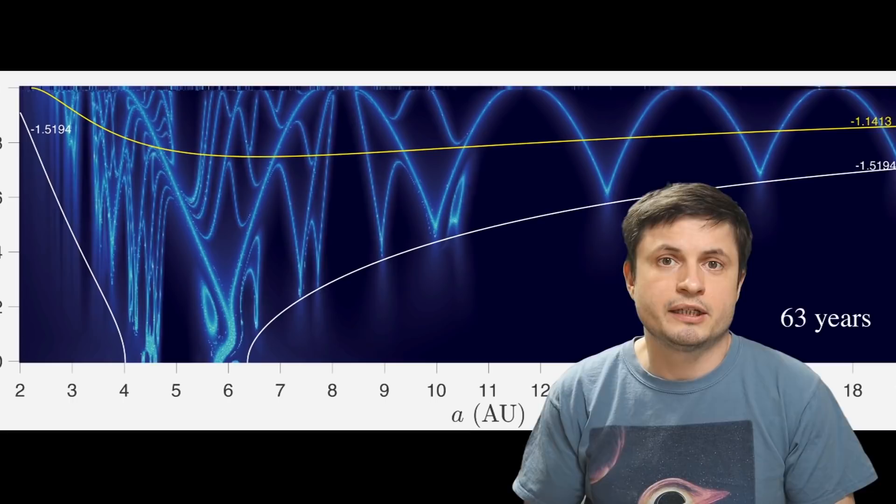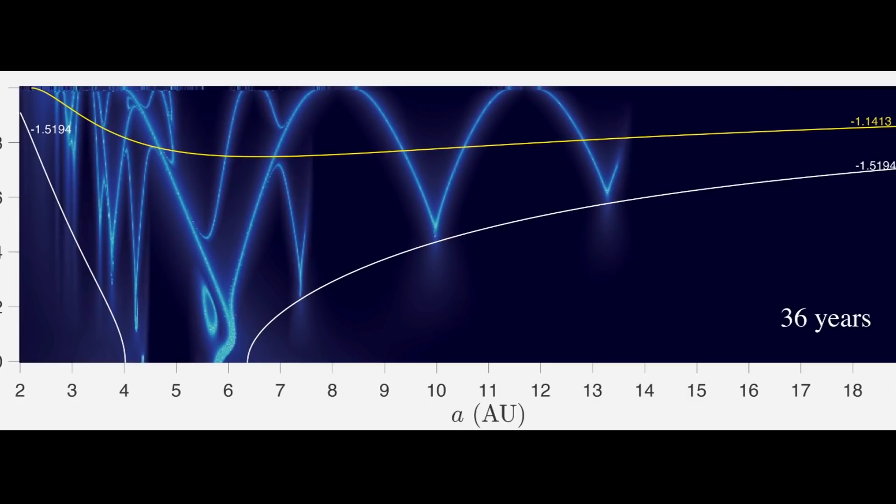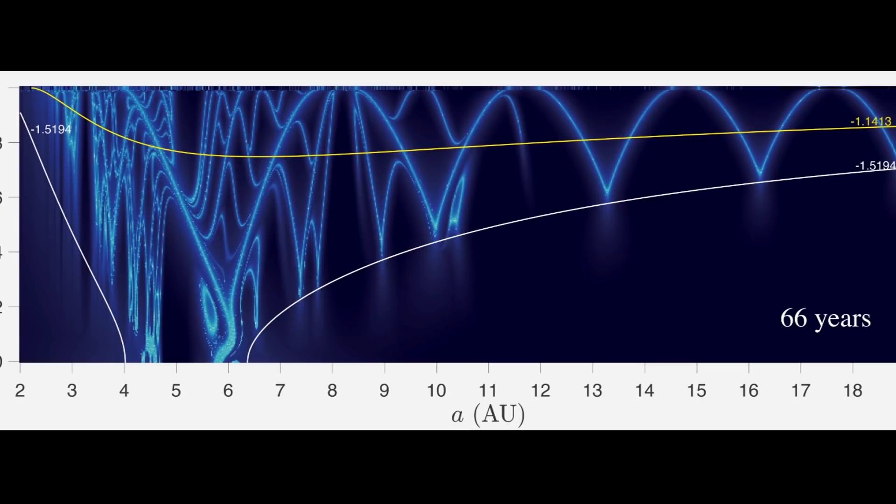Now the thing is, none of these manifolds, none of these tunnels, if you want to call them that, stay stable. They do destabilize and they do change with time, which of course is related to the orbits of the planets on the sun itself.